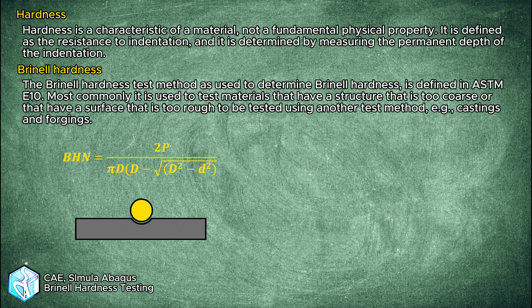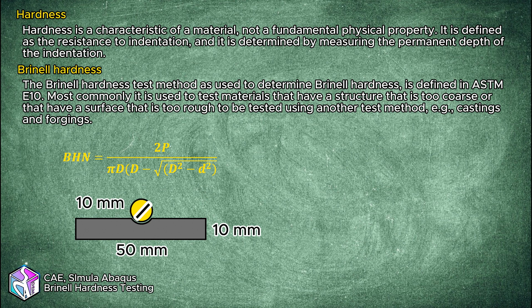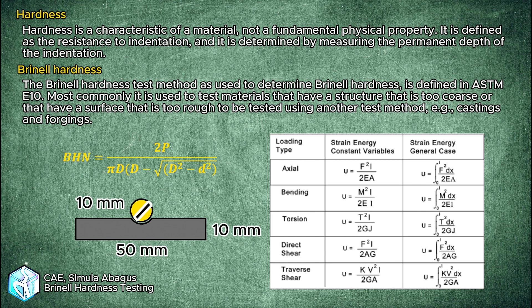The geometry of our simulation uses a carbide ball with 10 mm diameter and a specimen with 50 mm diameter and a height of 10 mm. During our simulation, we are not going to use predetermined forces because Abaqus usually doesn't converge with force inputs. Instead, we will use displacement boundary conditions, and then transform the results using a table and strain energy to determine the applied force and reach the BHN number.